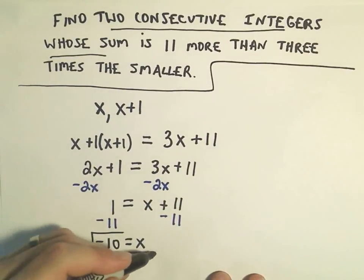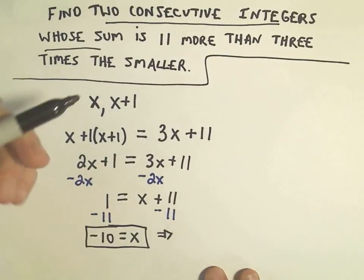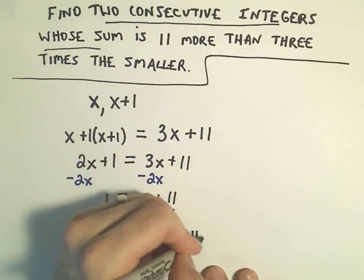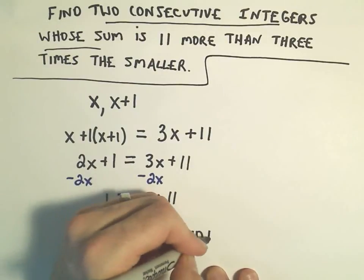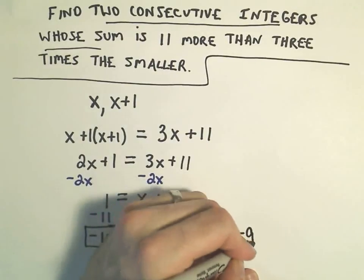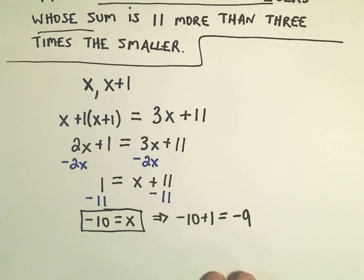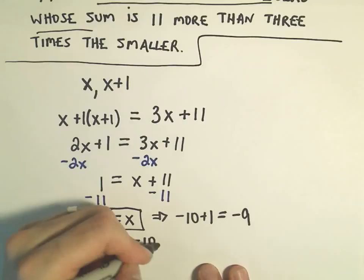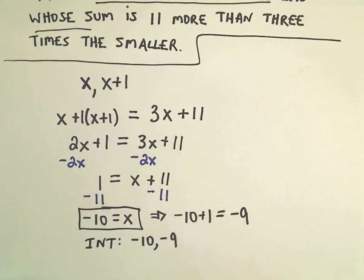We've now found one of the integers. The other one, you simply add 1 to x. So we would get negative 10 plus 1, which would be negative 9. Our two integers are negative 10 and negative 9.